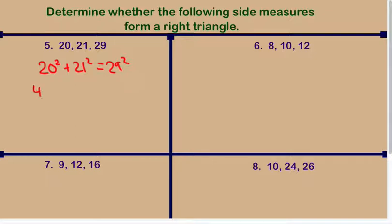So, 20 squared is 400, 21 squared is 441, 29 squared is going to be 841. I have a good feeling about this one. Yes. Winner, winner, chicken dinner. Yes, that one works.